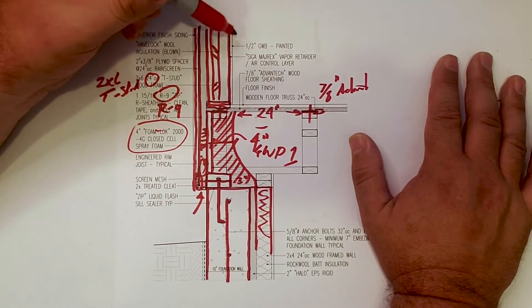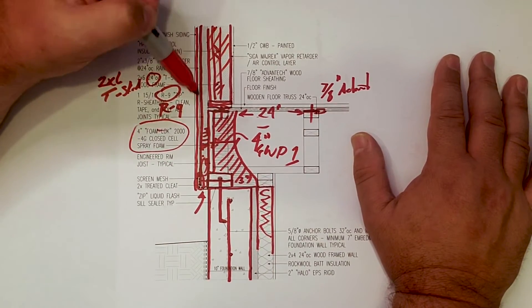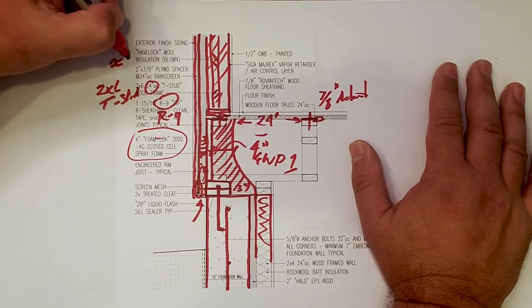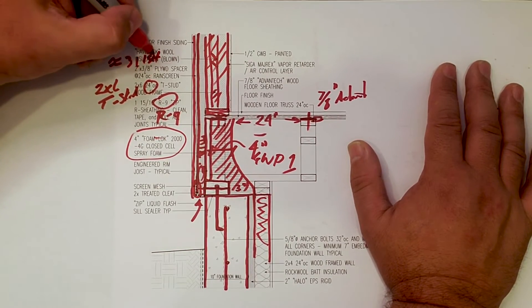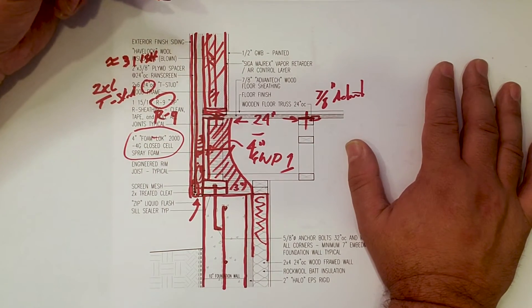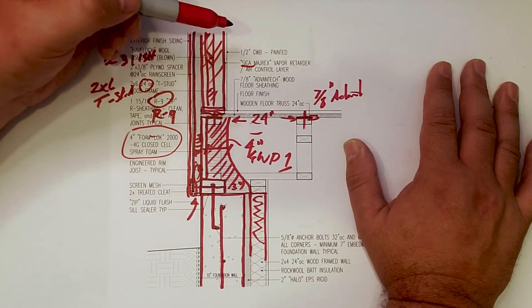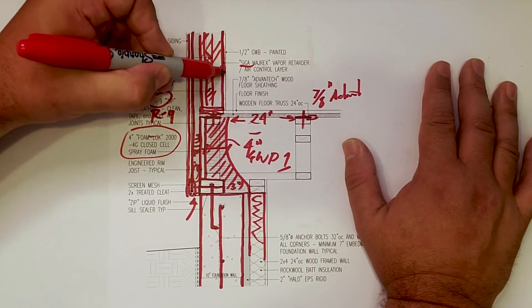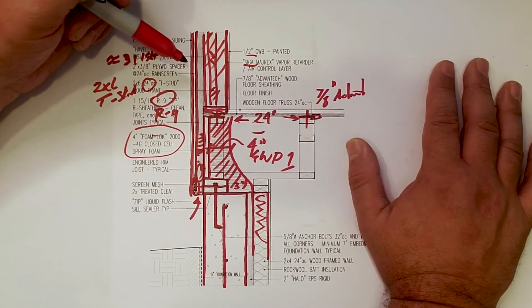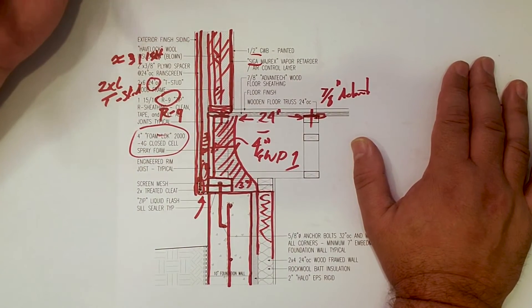And then above grade here, we have Havelock blown wool insulation in our wall. And then mixed with the R9, that gets us to roughly 31-ish for the wall. But our R value doesn't mean as much to me as air tightness, and we performed really, really well on this house below passive house standards. Moisture control, you can see we have our Siga Myrex vapor retarder that we lined the face of the wall with before we put up our gypsum board. So we took care of our control layers there.